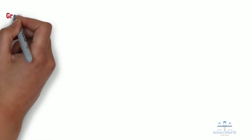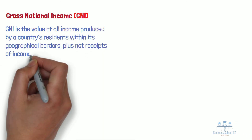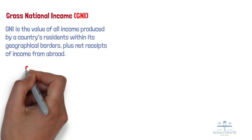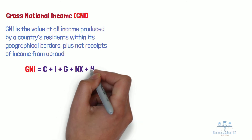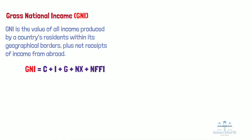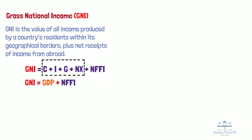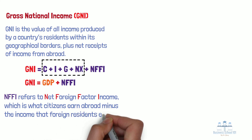Beside GDP and GDP per capita, gross national income, or GNI, is another measure of national wealth. GNI is the value of all income produced by a country's residents within its geographical borders, plus net receipts of income from abroad. In short, GNI is a measure of all money, goods, services, and investments that enter and stay in a country. The formula for calculating GNI is often represented as GNI equals C plus I plus G plus NX plus NFFI. Because the first four factors also represent GDP, GNI can also be calculated as GNI equals GDP plus NFFI. NFFI refers to net foreign factor income, which is what citizens earn abroad minus the income that foreign residents earn in a country and send out of a country.